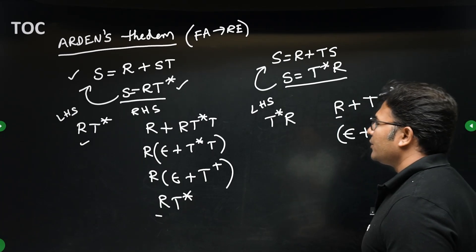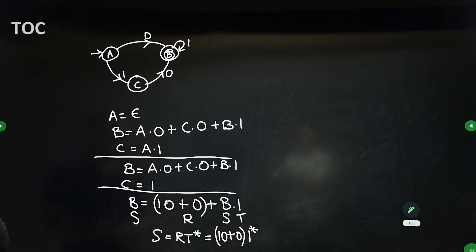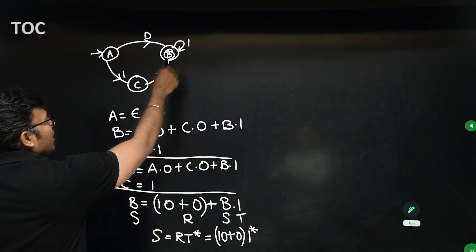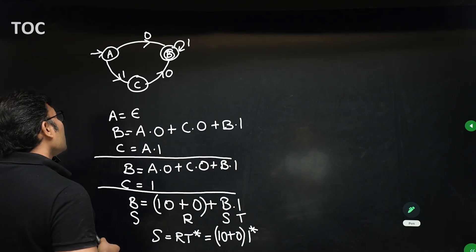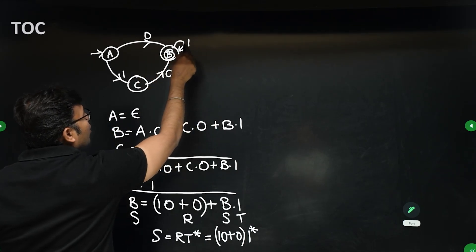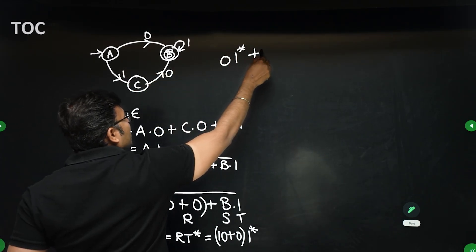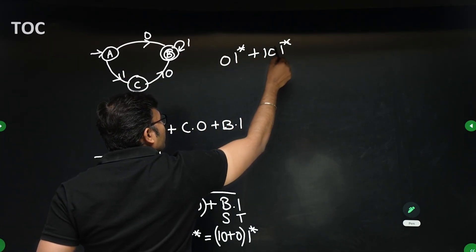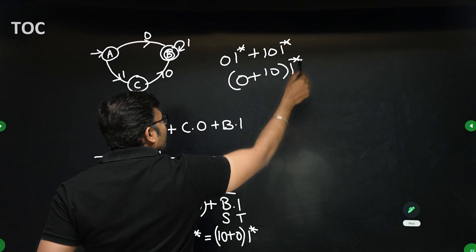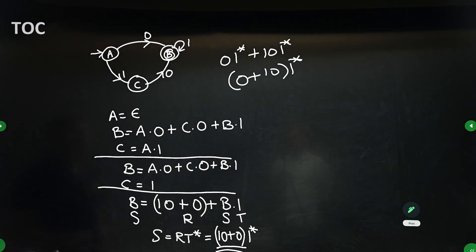Now let us see some examples. What is the regular expression for this finite automaton? All you have to do is use Arden's theorem and get the value of the final state, which will be the language accepted. But with intuition you can do it directly — this is 0 followed by 1* then 0, or 10 followed by 1*, pulling out 1* as common gives (0 + 10)1*.